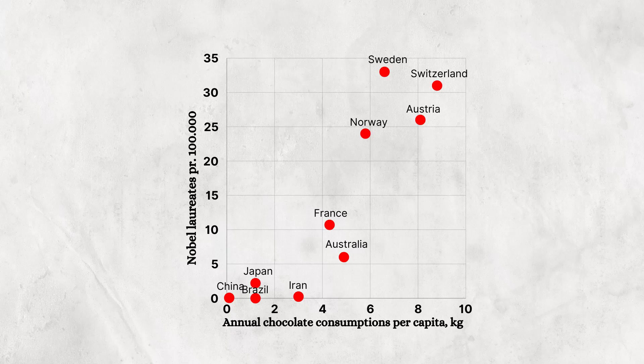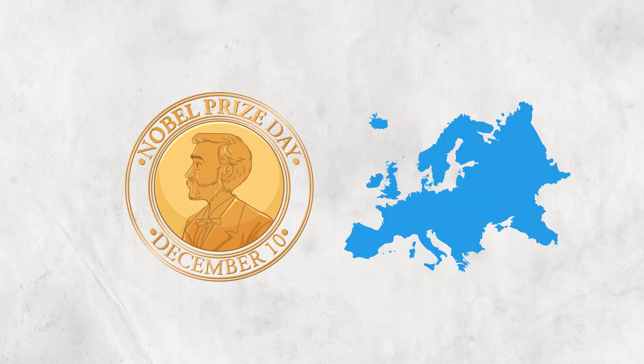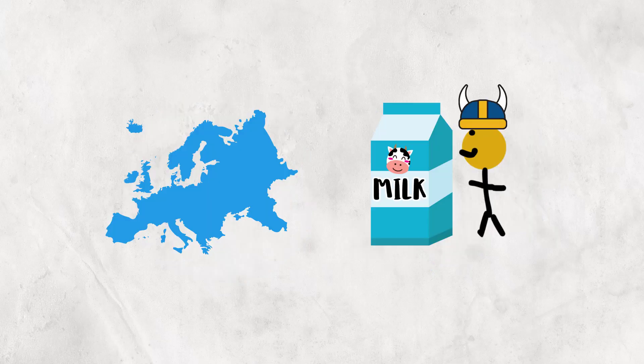In the example of Nobel laureates and chocolate consumption, we can see that countries like Sweden, Switzerland, Austria and Norway all have a high chocolate consumption, while also having a lot of Nobel laureates. So it looks like the more chocolate you consume, the more likely you are to win a Nobel Prize. But an underlying factor here could be the fact that the Nobel Prize originates from Sweden, and the nearby geographical areas are thus more prone to winning said prizes, in addition to these areas being far less lactose intolerant and thus creating better conditions for the chocolate market.